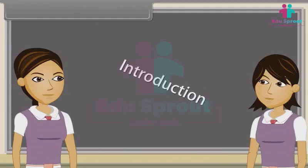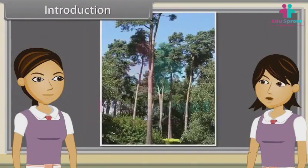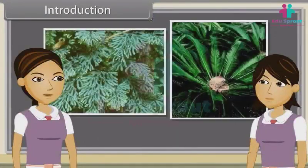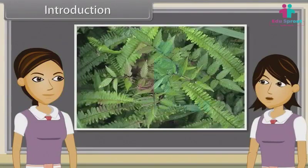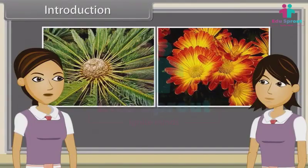Introduction. As we have already discussed earlier, land plants are divided into Thallophyta, Bryophyta, and Tracheophyta. Tracheophyta includes vascular plants. These vascular plants are Pteridophytes, Gymnosperms, and Angiosperms. We have already discussed Pteridophytes. Now we are going to study Gymnosperms and Angiosperms.